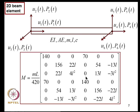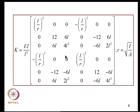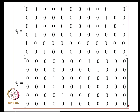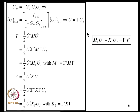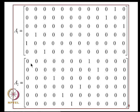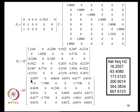Returning to the numerical example: we have the beam element mass and stiffness matrices derived in the previous class. With two elements, we construct the assembly matrices A1 and A2, then the Gamma matrix. Computing Gamma^T M Gamma gives M_gamma and Gamma^T K Gamma gives K_gamma. Performing the eigenvalue analysis on this problem yields the natural frequencies.